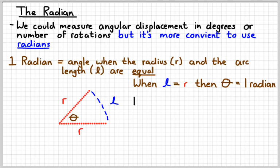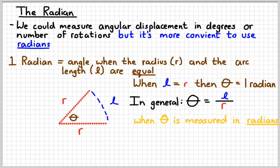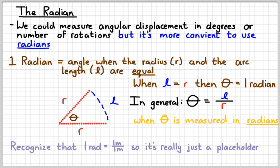A general equation we can write is that the angular displacement of a point on a rotating object equals the linear distance it's moved over its radius — theta equals L over R — when using the unit radians. Notice that L over R are both measured in meters, so a radian is a ratio of meters per meter. We just write it as a placeholder to remind ourselves we're using radians rather than degrees or something else.